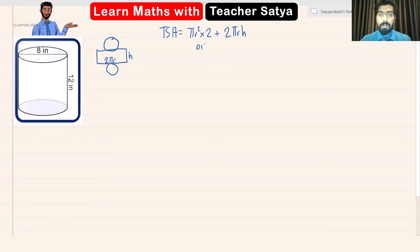Or in other words, we can write this as two pi r square plus two pi r h. All right, guys?